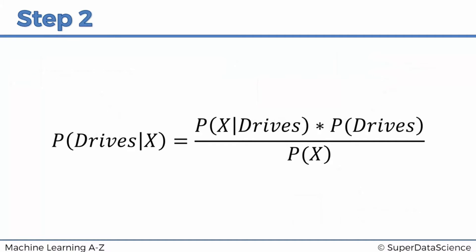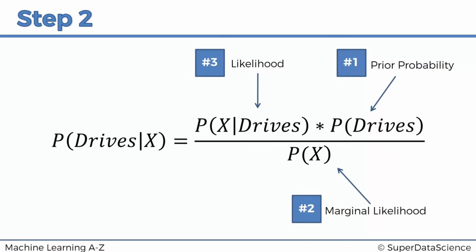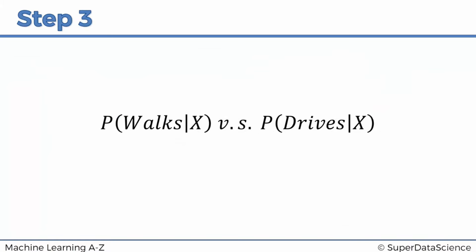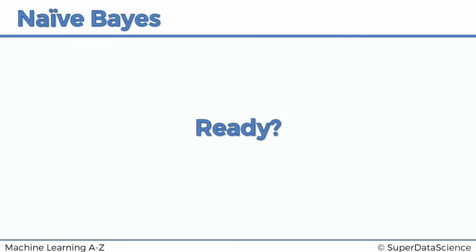Next is step two, where we calculate the probability that somebody drives given those features X. Again, we'll calculate the prior probability, then the marginal likelihood, then the likelihood, then the posterior probability. Finally in step three, we compare the probability of walking versus driving given features X, and decide which class to assign the new data point. As you can see, the Naive Bayes classifier is a probabilistic type of classifier — we first calculate probabilities, then based on those probabilities we assign a class.